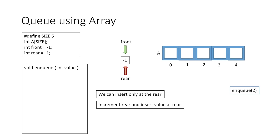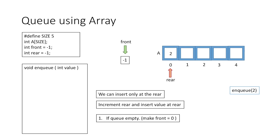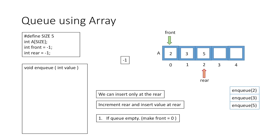Suppose we have to enqueue the value 2. We will increment rear by 1, giving it index 0, and then insert 2 at that index. When we insert the first element, we need to take care of front as well, because front still has the value -1 which is an invalid index. So if the queue is empty and we insert the first element, we will make front equal to 0. Now both front and rear are at their correct position. Similarly if we enqueue 3, we increment rear and place 3 at index 1, and again if we enqueue 5 we increment rear and place 5 at index 2.